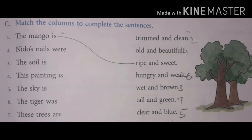The second one is: Nido's nails were trimmed and clean. Trim means cut properly. The third sentence: the soil is wet and brown. Soil means mud.